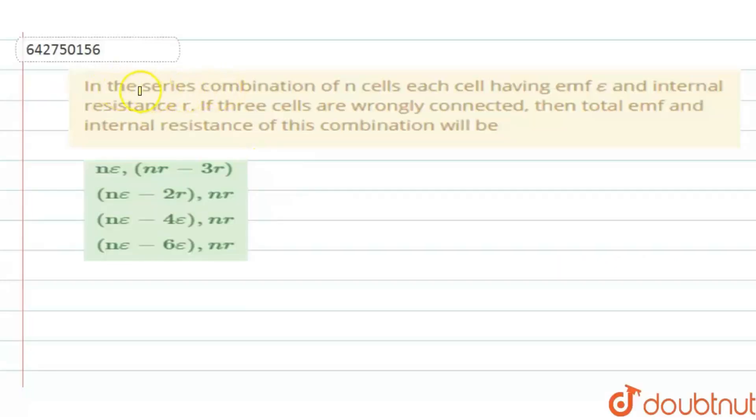The series combination of N cells, each cell having EMF E and internal resistance R. If three cells are wrongly connected, then total EMF and internal resistance of this combination will be.